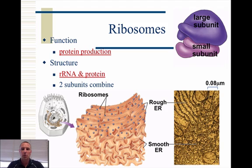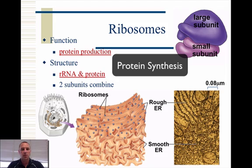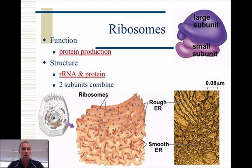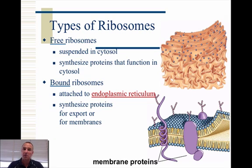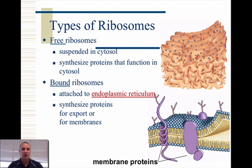When you look at the ribosome, its main job is to produce proteins, or what we would call protein synthesis. The structure, as I said, is RNA and protein. These ribosomes can be found in several different forms. They can be found as free ribosomes, which means they're not attached to anything — just located in the cytosol or cytoplasm. They can also be bound ribosomes, found on the ER, or endoplasmic reticulum. In particular, the rough ER is where these bound ribosomes would be. They produce proteins, and those proteins are exported to make things such as the membrane by the endoplasmic reticulum.